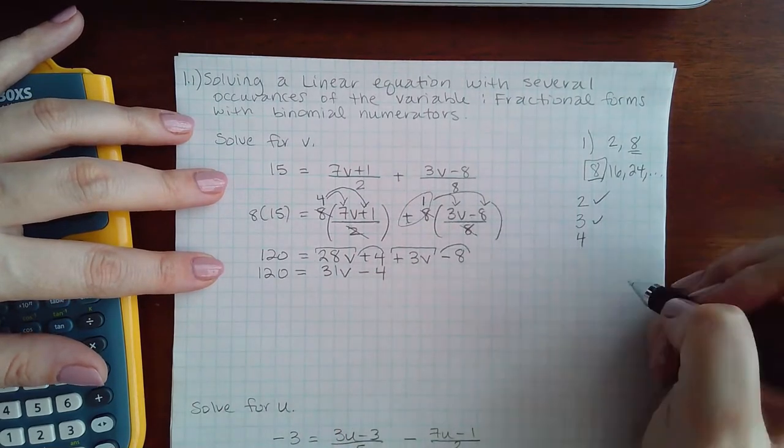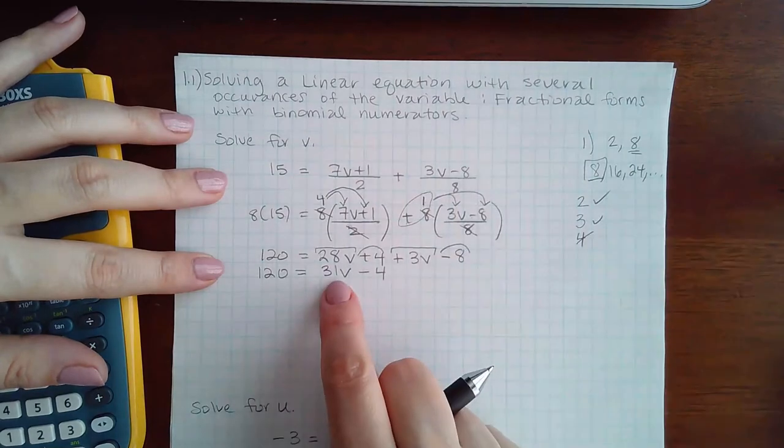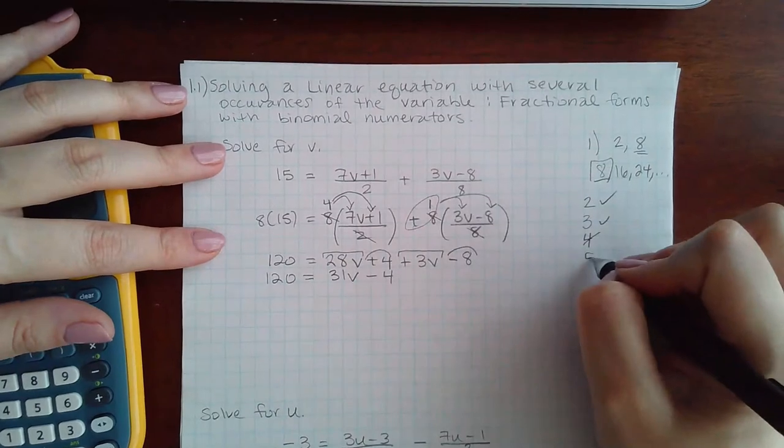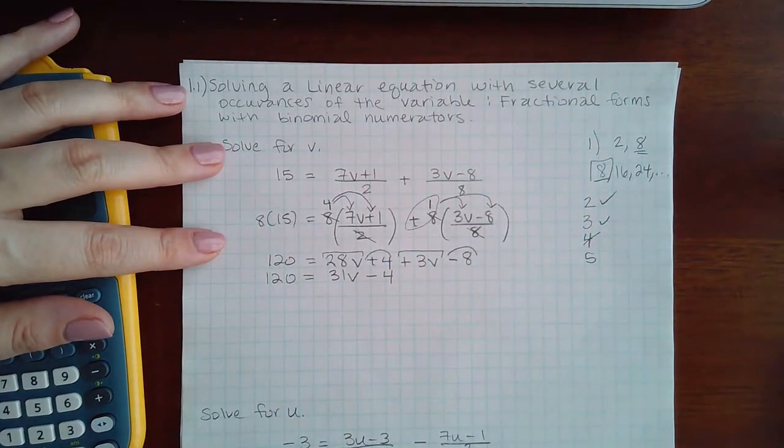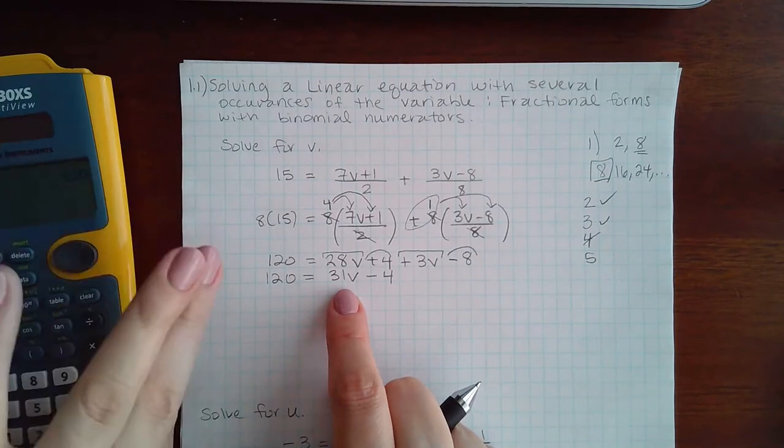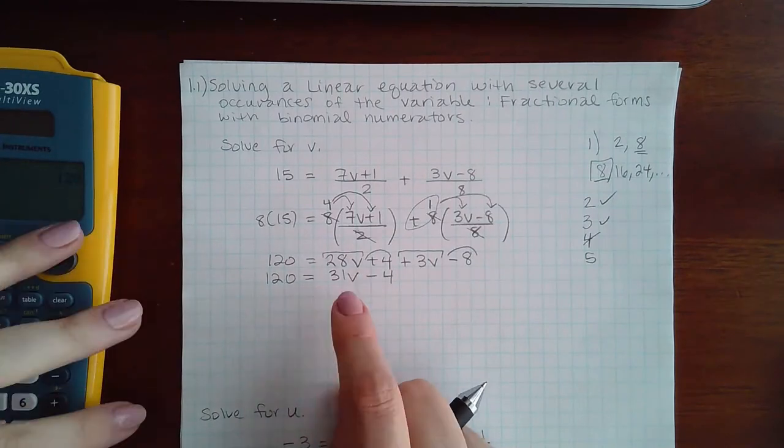There's really nothing to do here because you only have one term with the variable and it's already on a side. So the next step is to move the constant to the other side. Since my variables are on the right, that means I need to move my constant to the left.